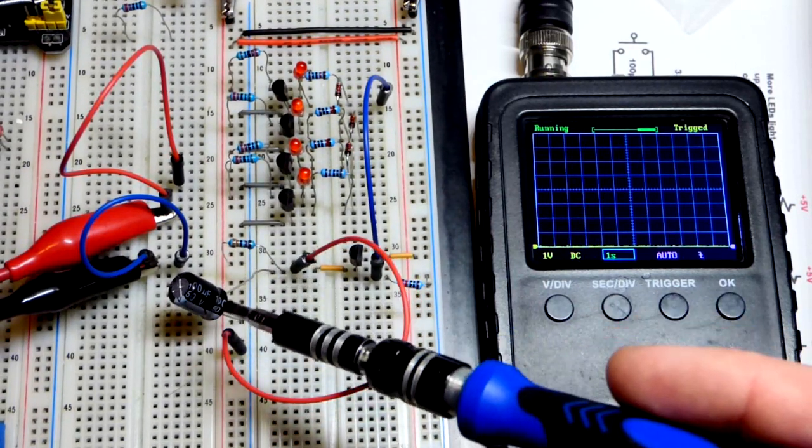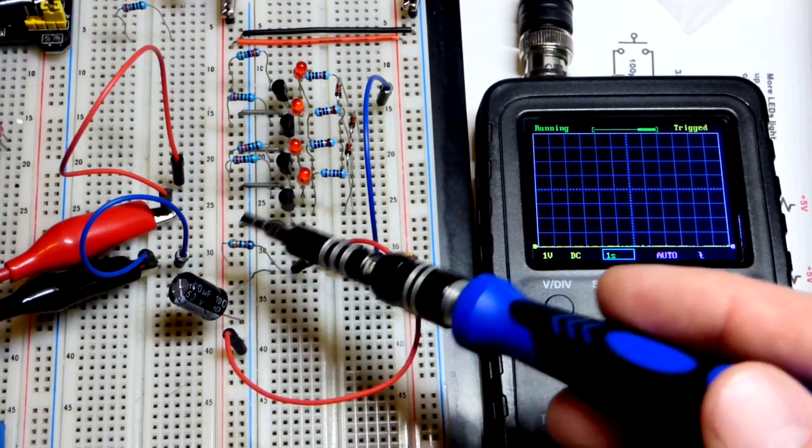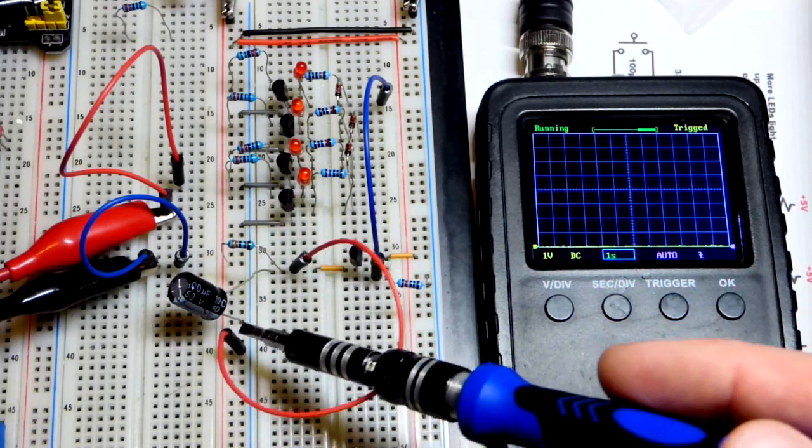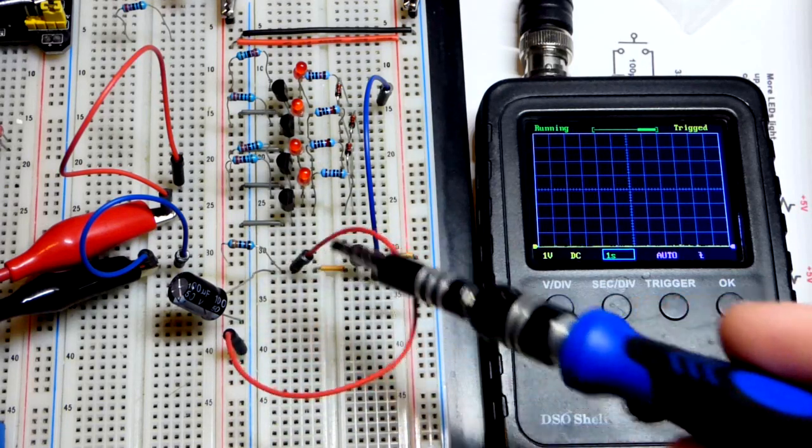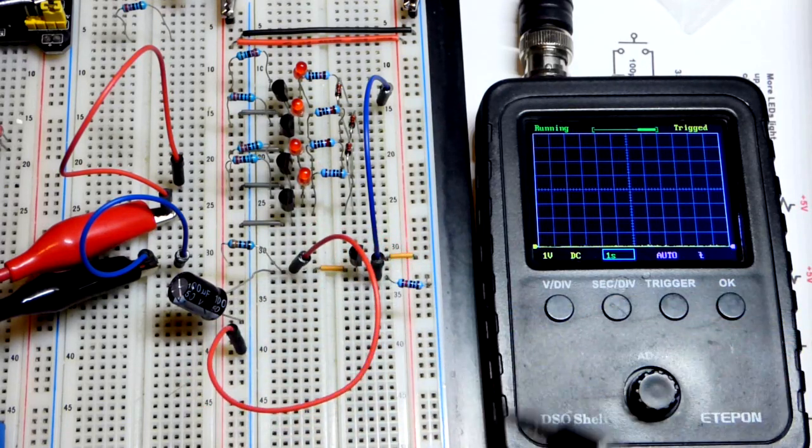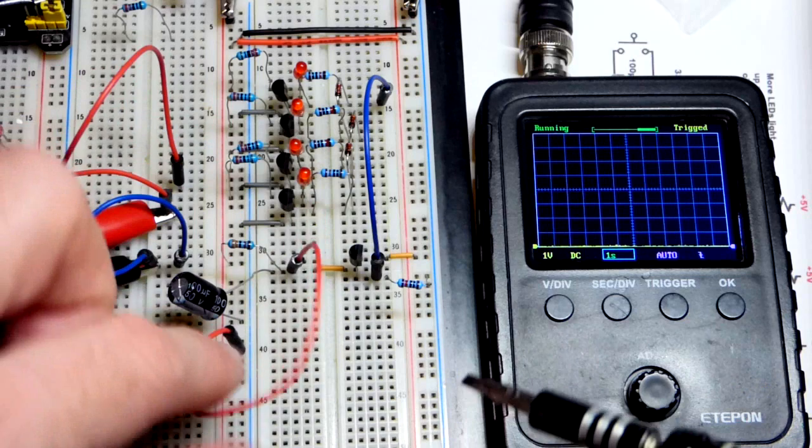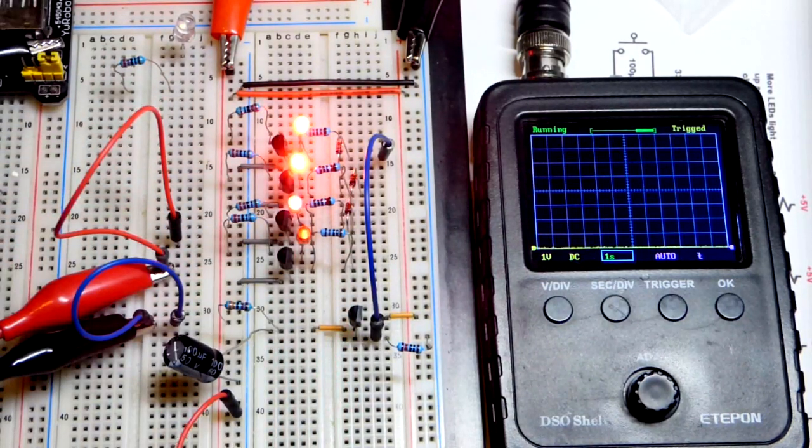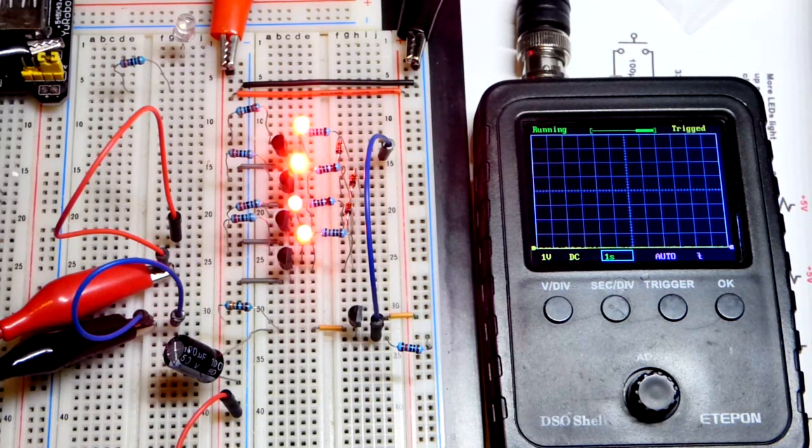So right now we have a capacitor. This was covered in the last video: 33,000 ohm resistor to charge the capacitor, 100 microfarad capacitor. But we have this jumper here, so any current goes directly to ground. The capacitor cannot charge. If I remove the jumper from one side or the other, then we don't have a path to discharge. You can see the capacitor charges, the LEDs light up.